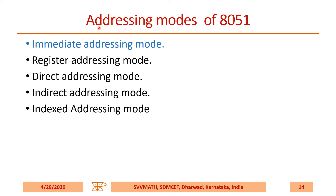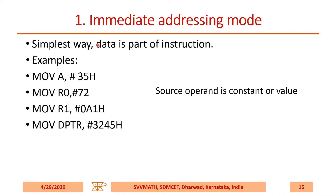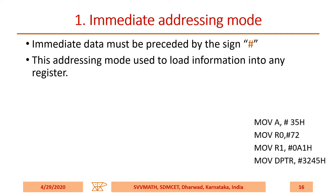In immediate addressing mode, in the simplest way, data is part of the instruction. Some examples: MOV A, #35H; MOV R1, #72; MOV R1, #0E1H; and MOV DPTR, #3245H. The source operand is a constant or some immediate value. Immediate data must be preceded by the hash symbol — this is one important point to remember for immediate addressing mode.